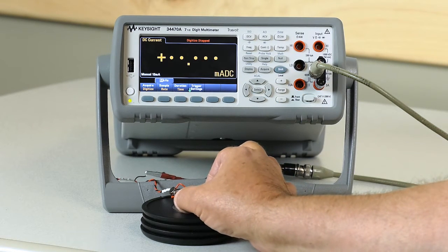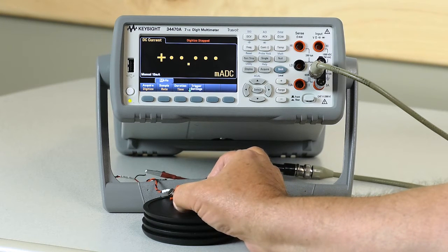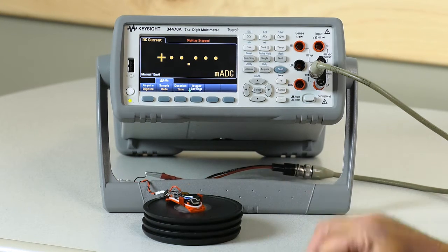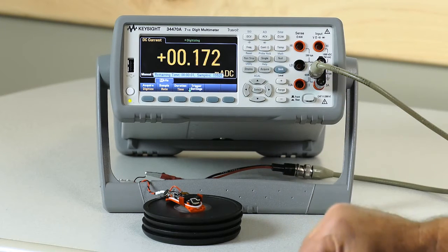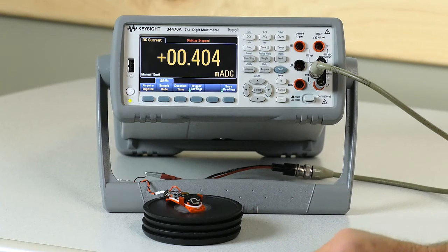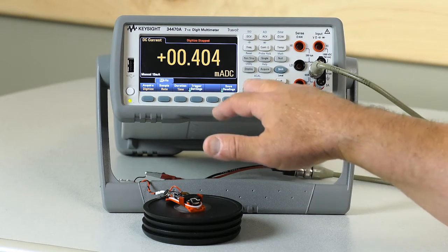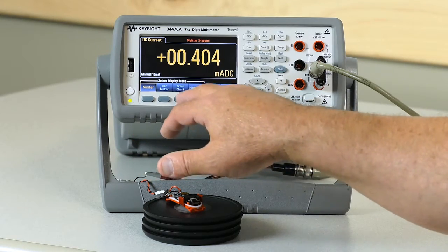I'm going to turn on the device which begins some activity. Now we've just acquired one second at 50,000 readings a second. I'm going to view that data using display, trend chart.